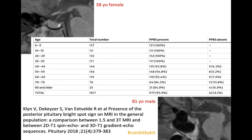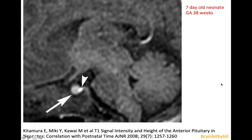Sometimes you do not see the posterior pituitary bright spot. This can be pathological, but it can also be normal — especially in males and especially with increasing age. In neonates, you might not only see high signal in the posterior pituitary but also in the anterior pituitary, because around birth there are many hormones present in the anterior pituitary as well. This can be seen in a term neonate on MRI at age seven days, where there is bright signal in both the posterior and anterior pituitary.